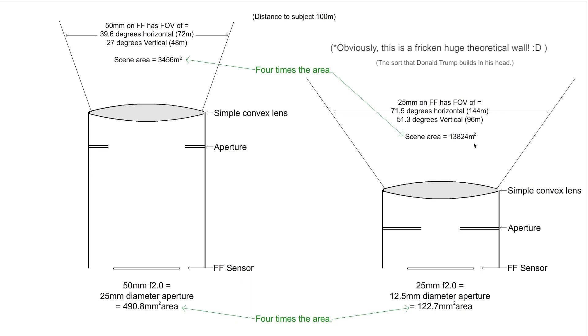Now, on a 25 millimeter, we're looking at a 71.5 degrees horizontal angle, field of view, and 51.3, so that would give us, we can see 144 meters of that actual physical wall across when it's 100 meters away, and we can see 96 meters from top to bottom. That gives us a scene area of that wall that's 100 meters away, 13,824 square meters. So we're looking at four times the actual physical width from top to bottom, left to right of that wall with the wide lens than we are with the 50 millimeter lens.